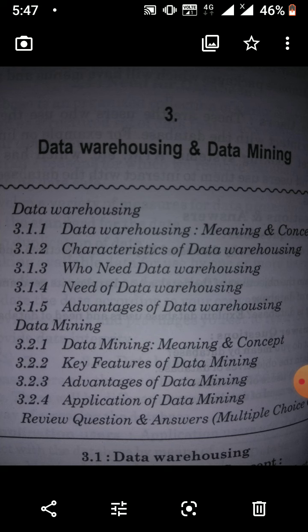A data warehouse is a system that stores data from a company's operational database as well as external sources. Data warehouses are different from operational databases because they store historical information, making it easier for business leaders to analyze data over a specific period of time. Data warehouse platforms also sort data based on different subject matter such as computer products or business activity.